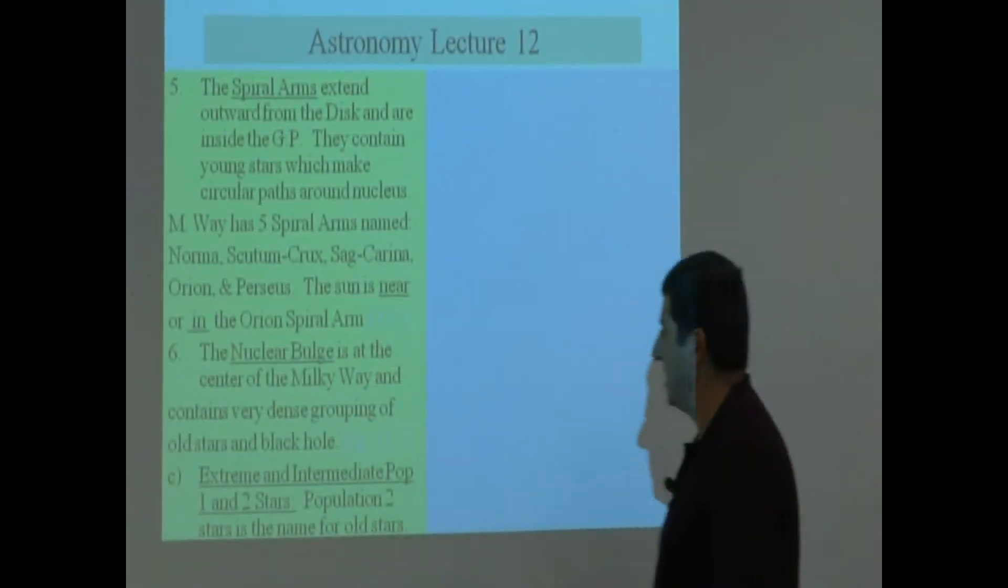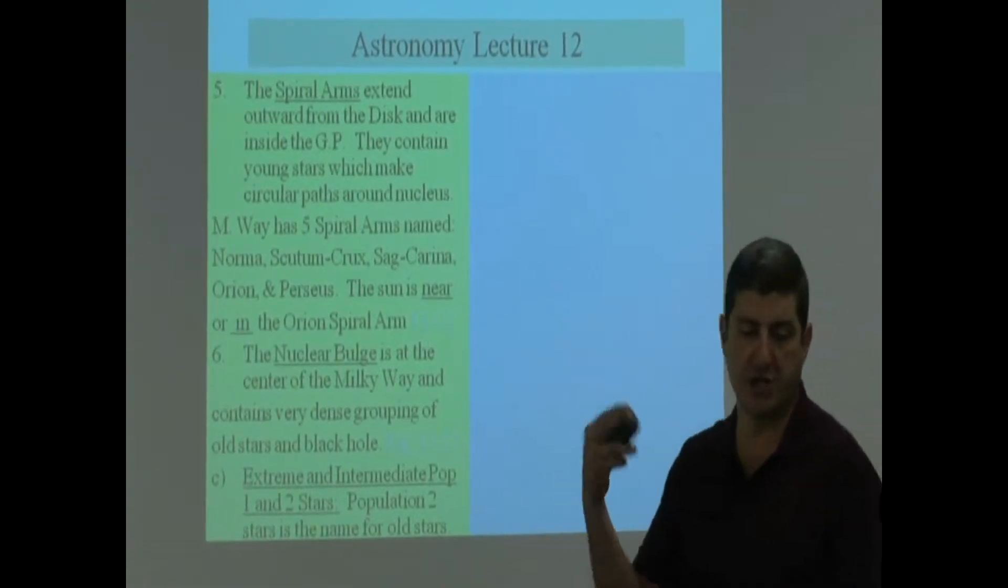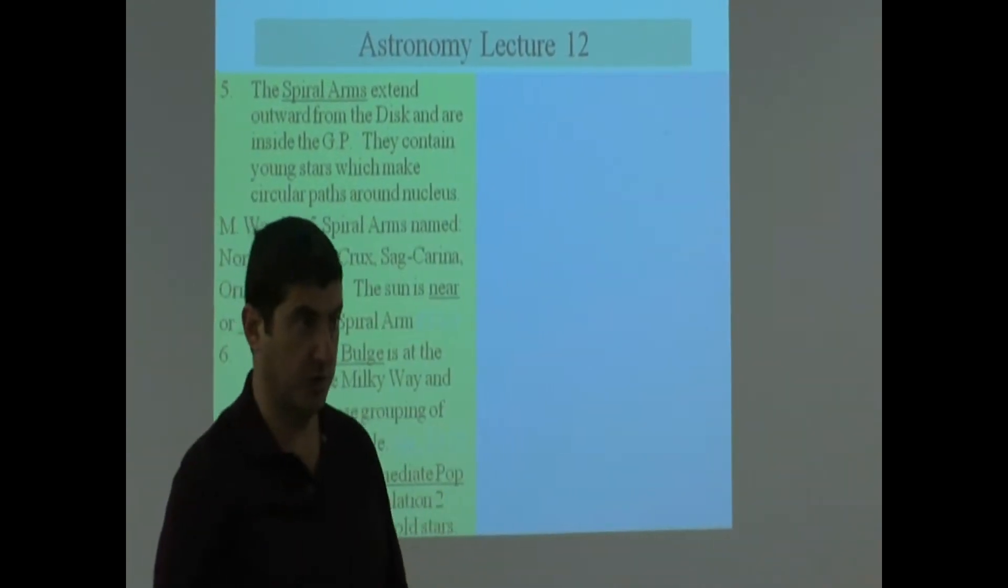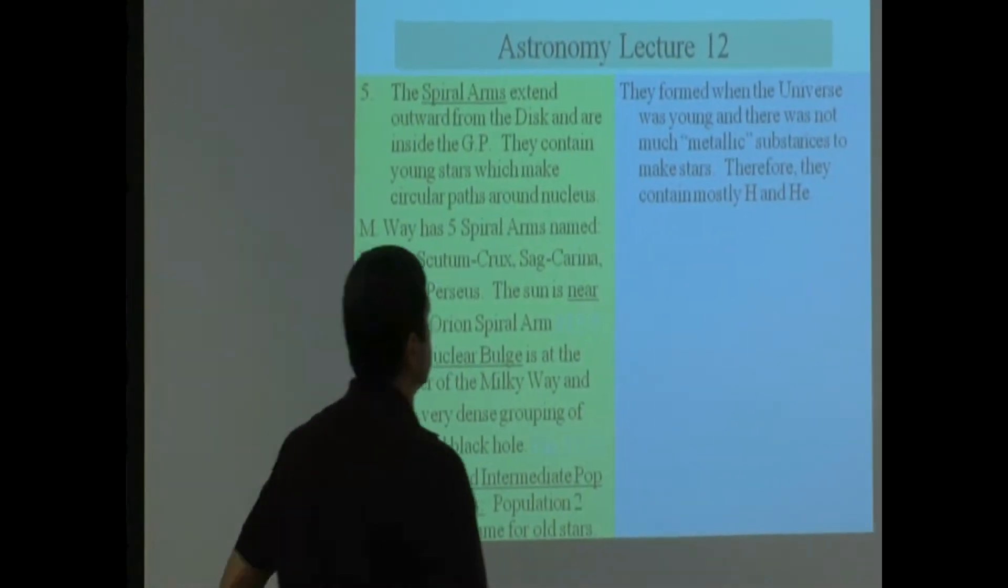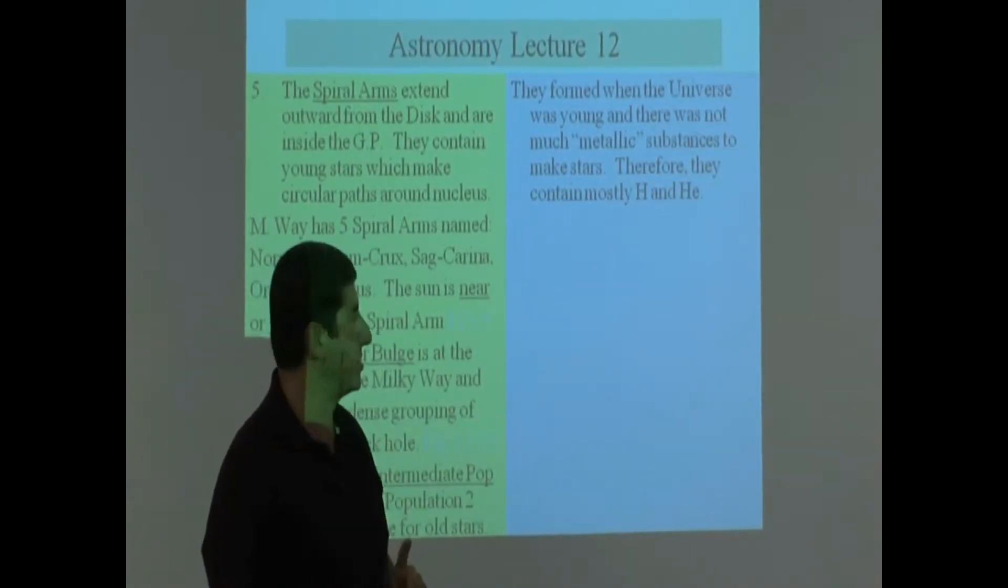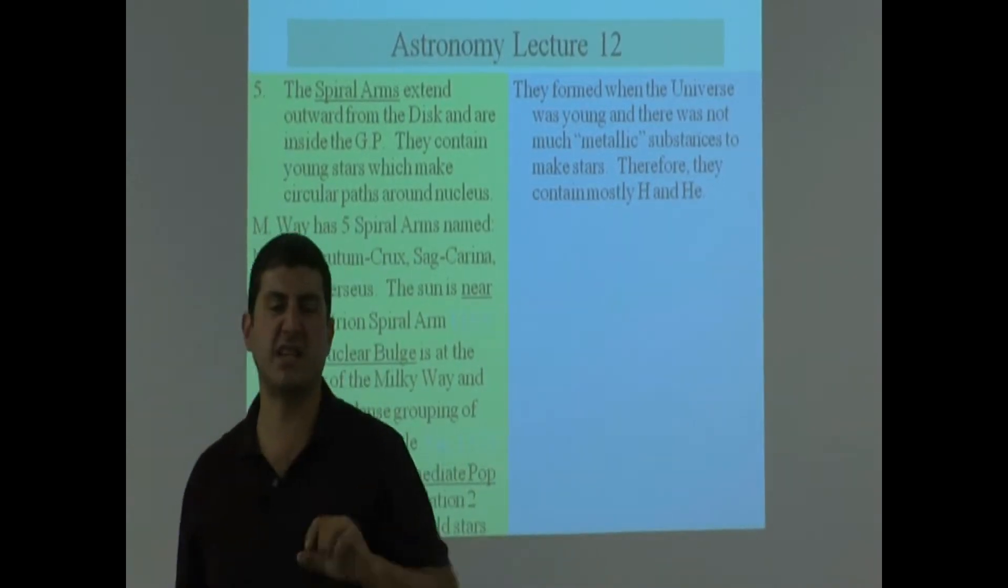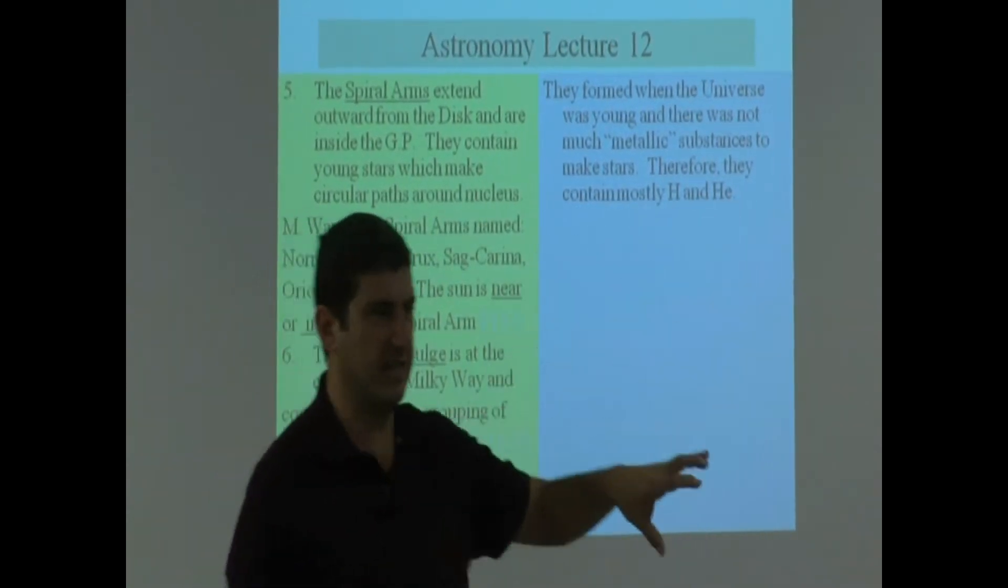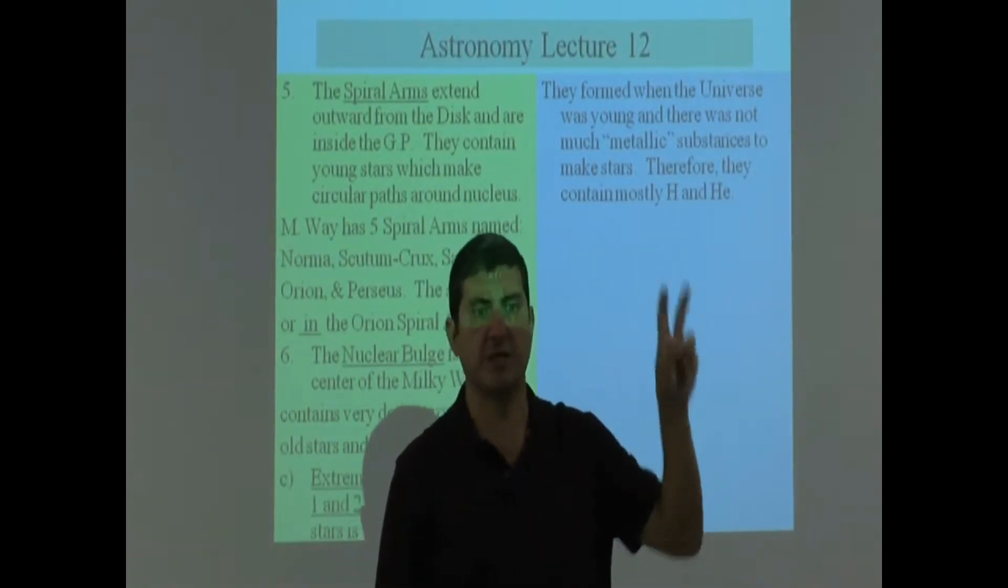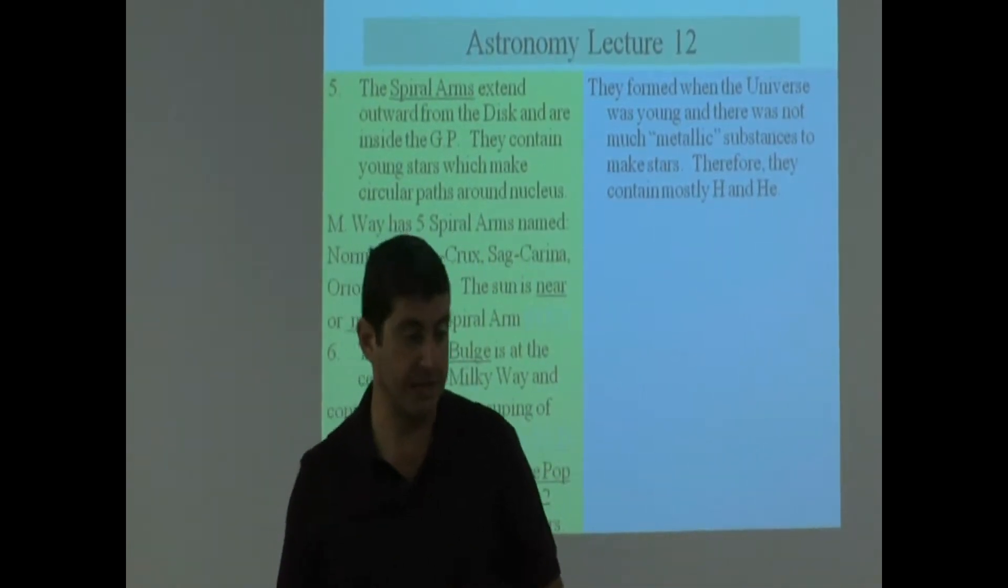Population 2 star is the name for old stars. Those are the ones that formed when the universe was young and therefore they are very, very old compared to us. They formed when the universe was young and there was not much metallic substances to make stars. When the astronomer says metallic, he means anything heavier than hydrogen and helium. Remember the Big Bang gave us hydrogen, helium, and a little bit of lithium—the first, second, third elements of the periodic table.